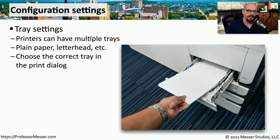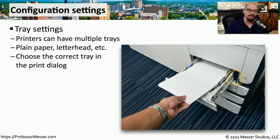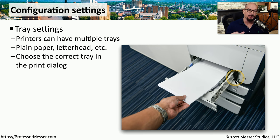On larger printers, especially in a workplace, you may have the option to choose a particular tray to print from. Printers can have many different printer trays, and each tray might have a different type of paper — there might be plain paper in one tray, letterhead in another, and legal size paper in a third. You would choose the tray you'd like to use in the print dialog, and when you press print, it will pull paper from the tray you specified.